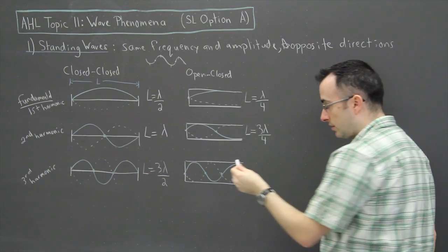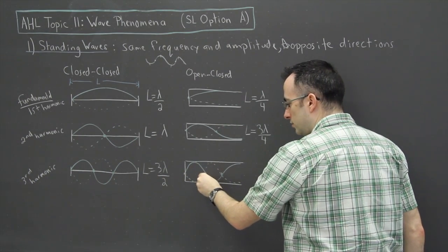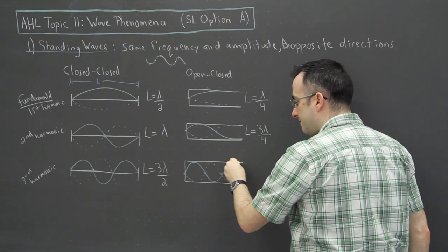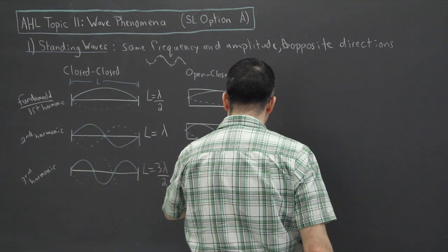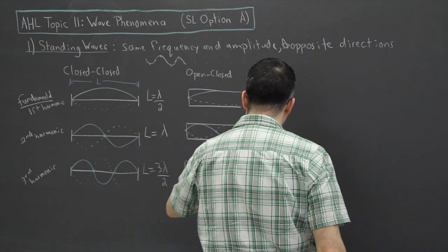Last one I have, if you take a look here: one, two, three, four, five quarters. So five lambda over four.